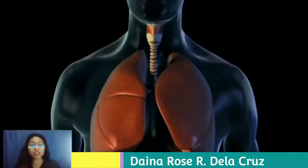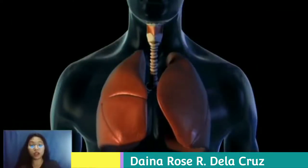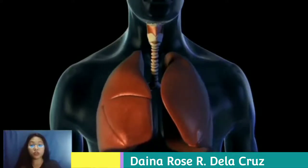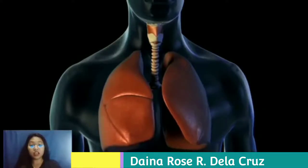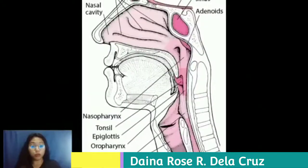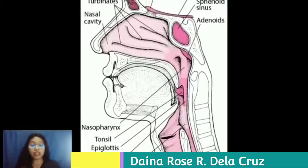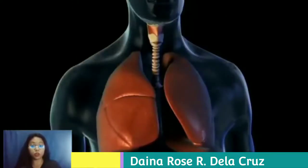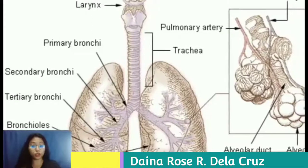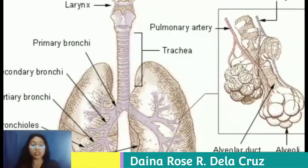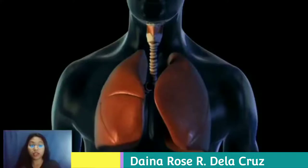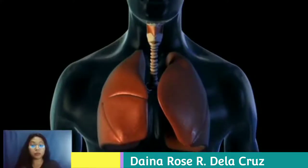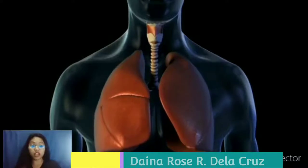Breathing is the process that brings oxygen into our lungs and moves oxygen through our body. It starts when we inhale air into our nose or mouth, traveling down the back of our throat into our windpipe, which is divided into air passages called bronchial tubes. Breathing provides the oxygen needed in cellular respiration to make ATP from glucose, and also rids the body of potentially toxic carbon dioxide.